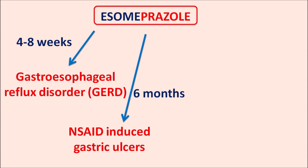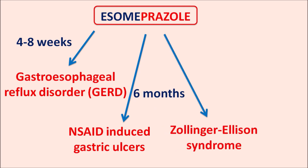The third clinical use is in the treatment of Zollinger-Ellison syndrome, a condition where excessive gastric acid is released because of a tumor that is producing gastrin. Gastrin is a hormone which promotes gastric acid secretion. In such conditions, S-omeprazole can be given in order to reduce the gastric acid secretion.